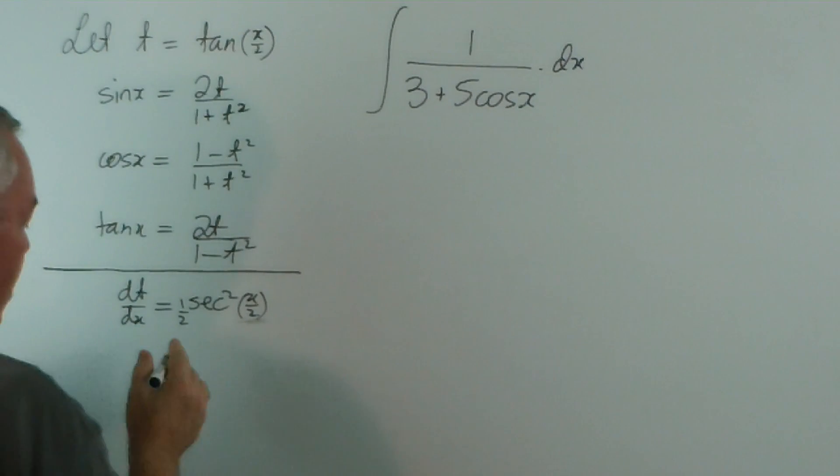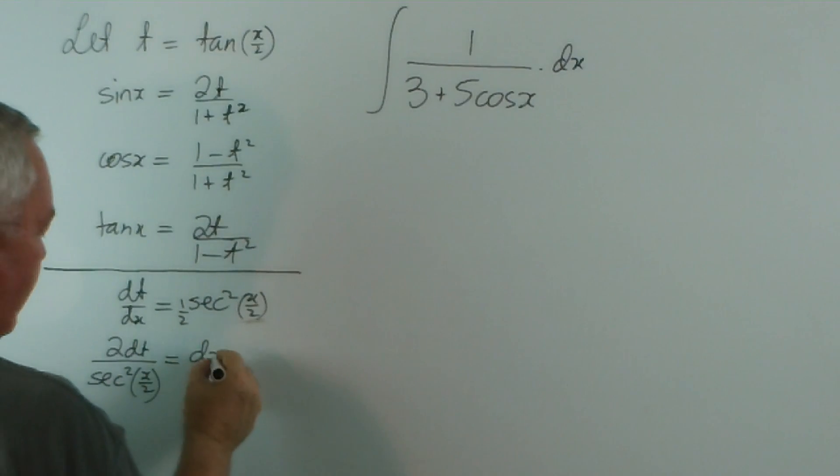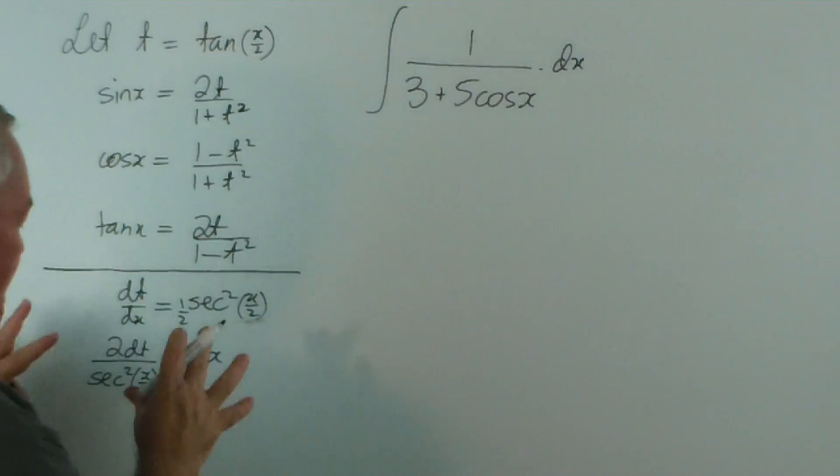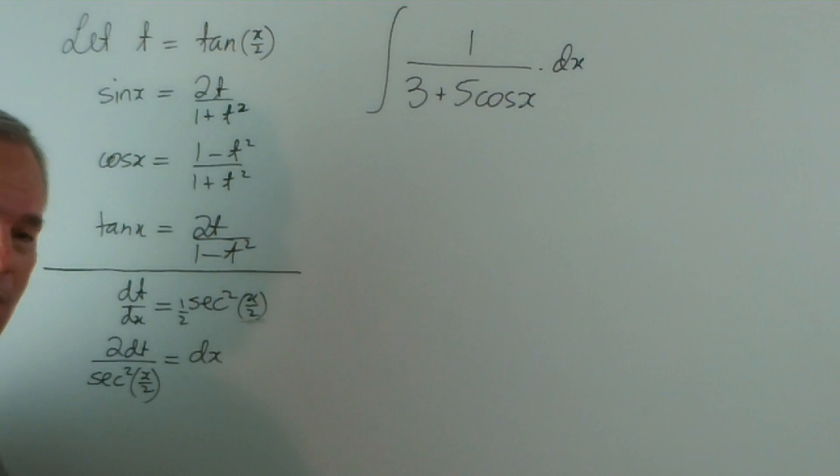Now, if I rearrange this, I'm going to put the 2 up here, so 2 dt. I'm going to move the sec squared down over here, sec squared x/2, and I'm going to move the dx up. So I've done a little bit of shuffling.